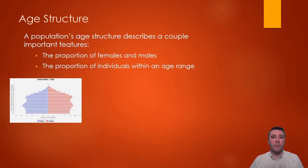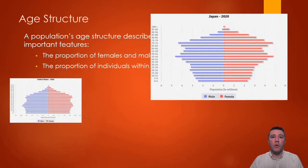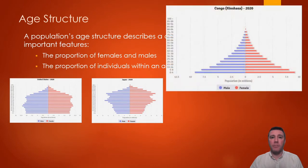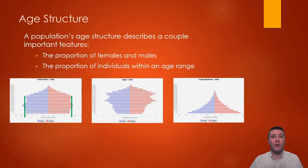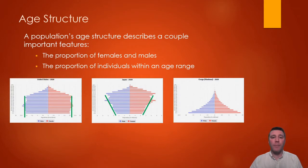In age structure diagrams from Japan and the Congo, we can identify three different and distinct shapes. In the US, the population of individuals in the pre-reproductive age groups and those in their child-producing years are more or less the same, resulting in a column-shaped outline — a population experiencing slow, positive growth. In Japan, the pre-reproductive age population is much smaller than those older individuals who are having children, resulting in a V-shape, meaning the population is experiencing negative growth — a decrease in size.